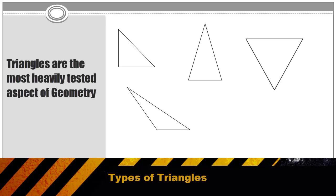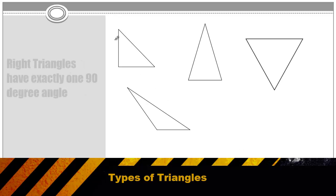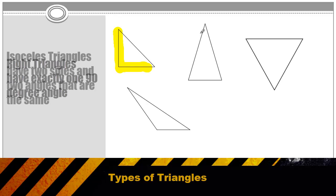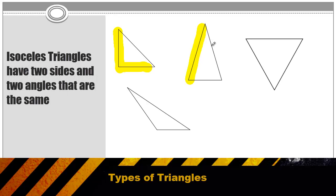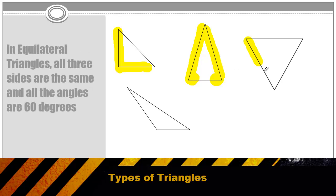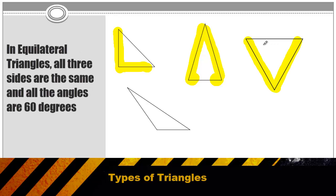You should be aware of four basic categories of triangles. 90 degree angles in a triangle create what's known as a right triangle. If two sides and two angles of the triangle are the same, that's known as an isosceles triangle. An equilateral triangle has all three sides and all three angles the same.